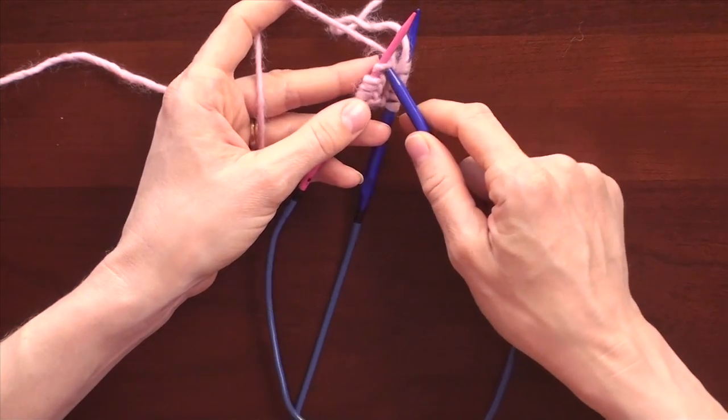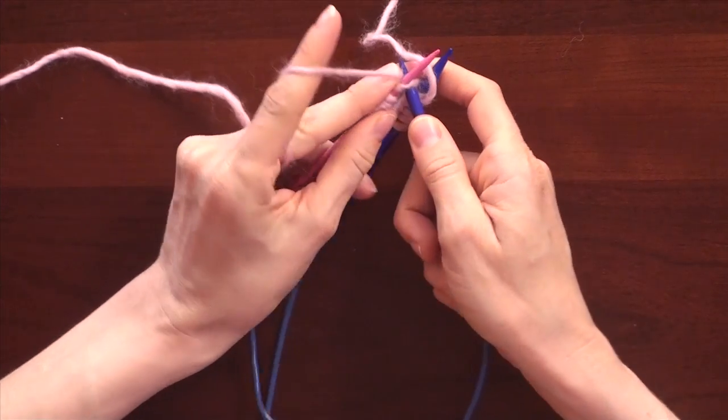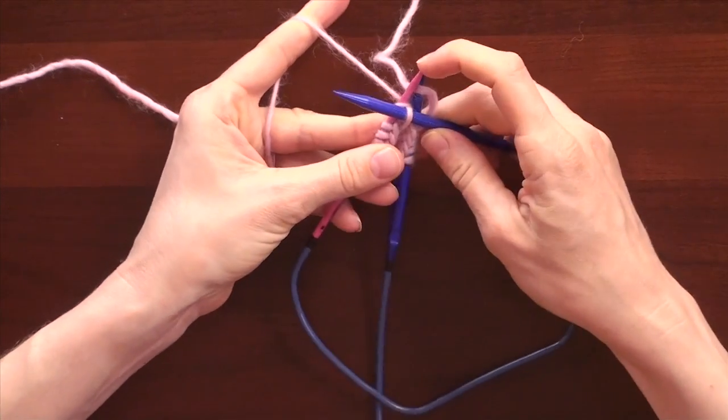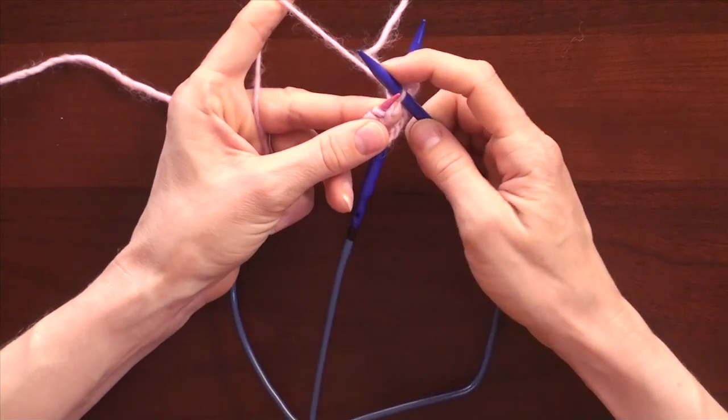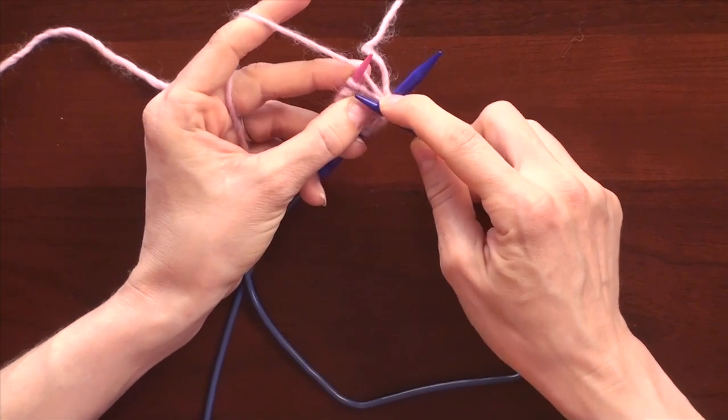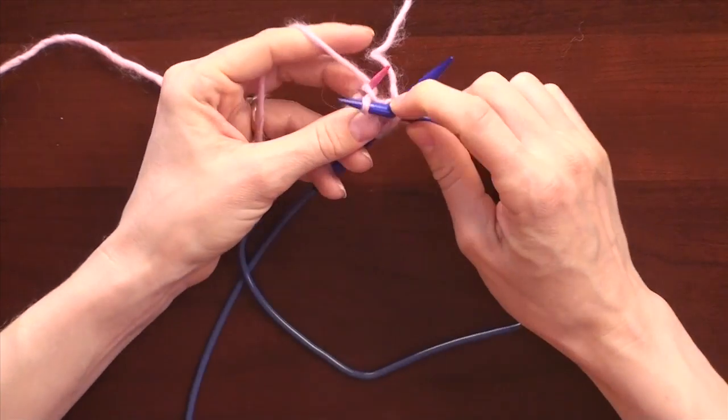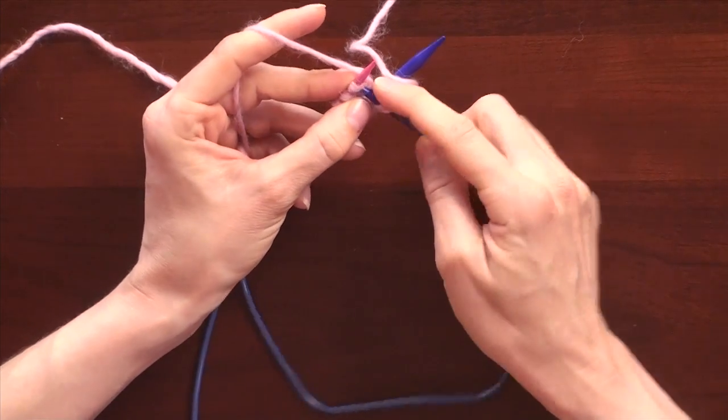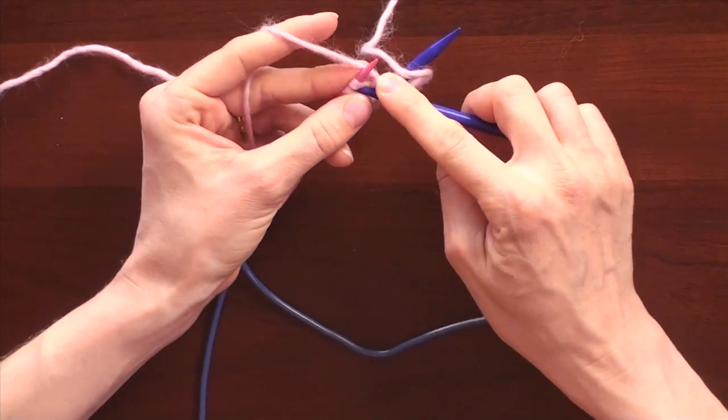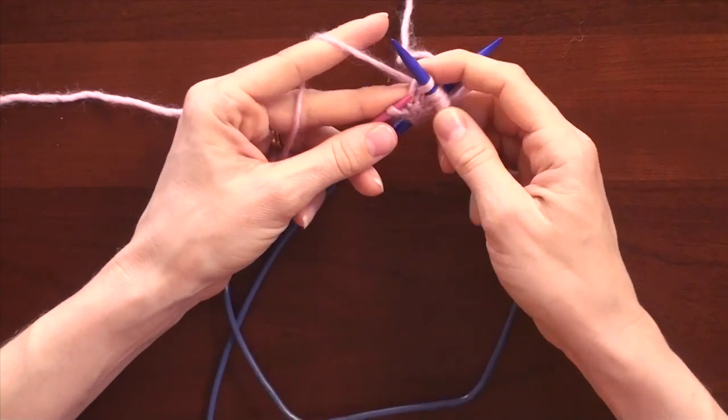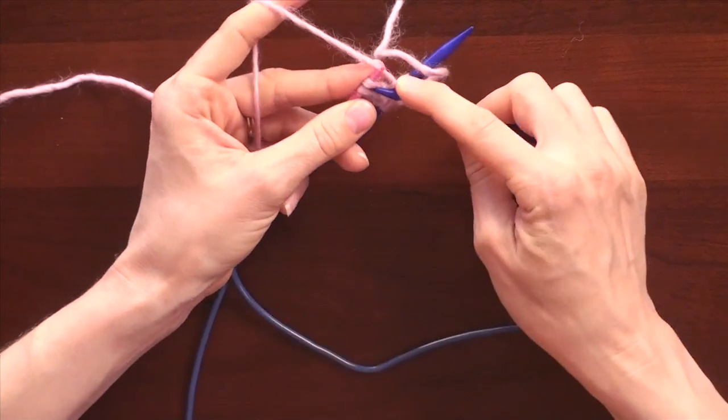And so I'm just going to begin knitting that first cast on stitch. I'm going to knit that first stitch a little bit snugly. Just want to make it so that it's a firm connection between the two needles. Nothing too loose or we'll get a ladder there.